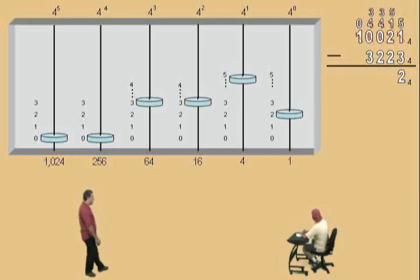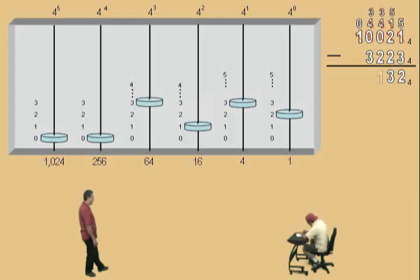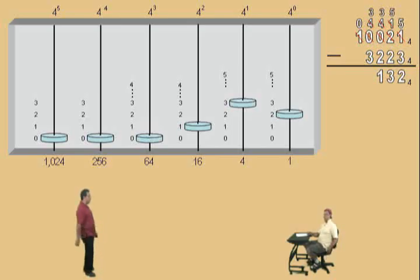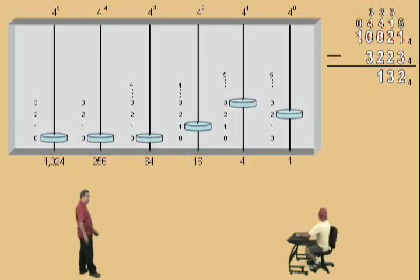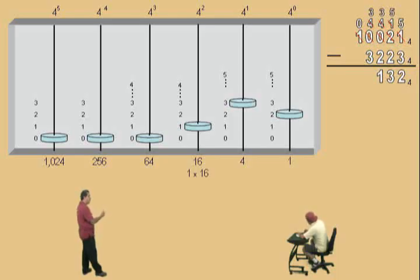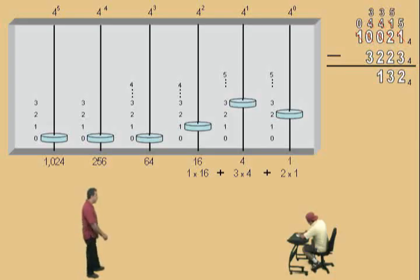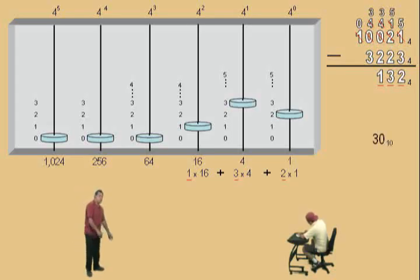Next one — 3 subtract 2? 1! Very nice, Charlie. And now what's 3 subtract 3? 0! That's right — that's 0. You don't have to put the 0 there unless you want to. And there's our answer: 1, 3, 2 base 4. We have 1 of those 4 squareds, 3 of those 4 to the first power, and 2 of those 4 to the 0 powers. There's our digits — 1, 3, 2. And if you multiply and add together, you should end up with 30 base 10.